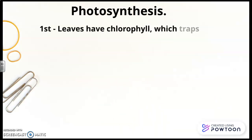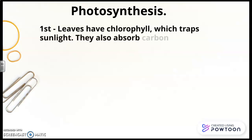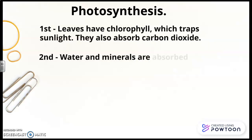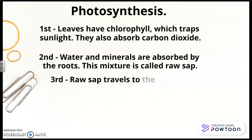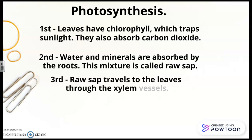Photosynthesis. First, leaves have chlorophyll, which traps sunlight. They also absorb carbon dioxide. Second, water and minerals are absorbed by the roots. This mixture is called raw sap. Third, raw sap travels to the leaves through the silent vessels.